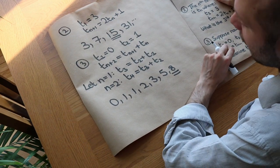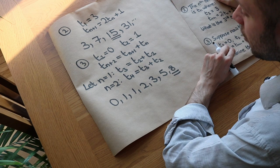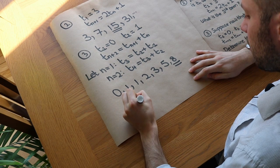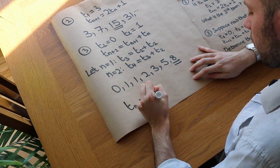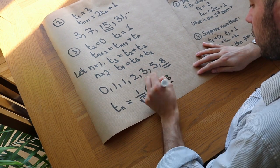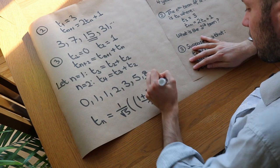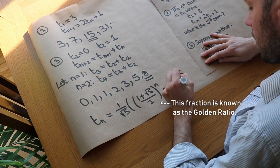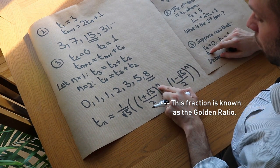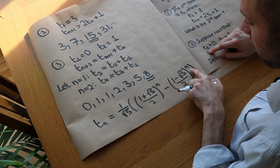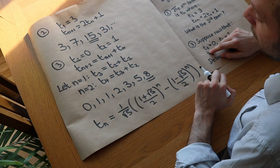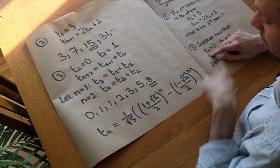You might wonder if there is a position-to-term formula for the Fibonacci sequence. The answer is yes. The nth term can be given using this complicated formula: 1 over root 5, times the quantity (1 plus root 5) over 2 to the power of n, minus (1 minus root 5) over 2 to the power of n. It does actually work for each term, but I think the term-to-term formula is much simpler than this one.